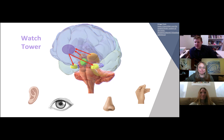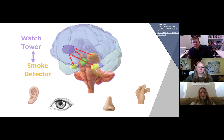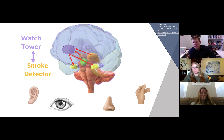Once the watchtower gets involved, it can take charge and smooth things out really quickly. That's why some of you even screamed when you saw the grizzly bear — it all happened so quickly, you didn't even notice it. So ultimately there's a relationship between the watchtower and the smoke detector that works well, a communication going between them — this higher-level cognitive brain and the lower emotional brain.